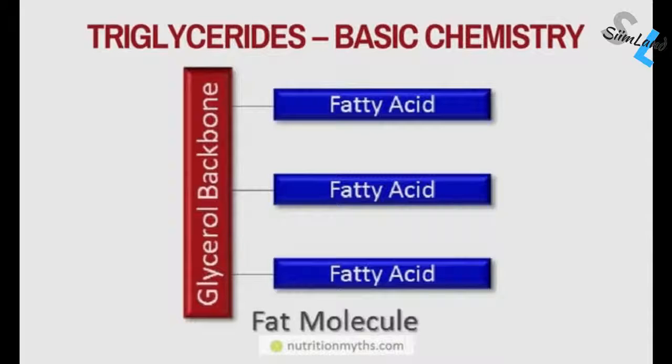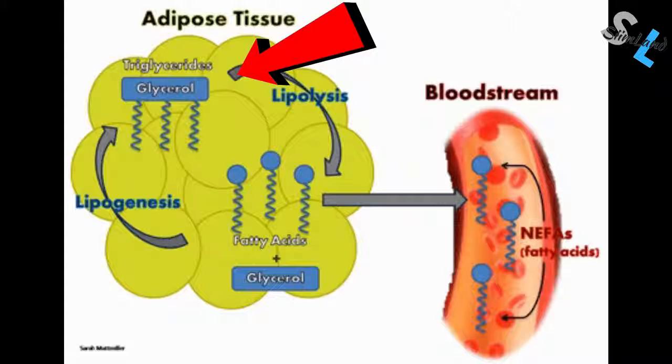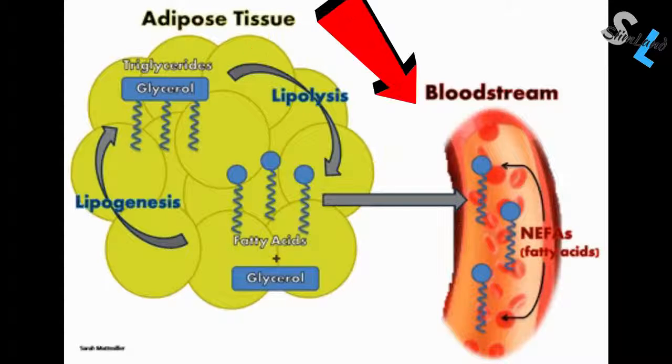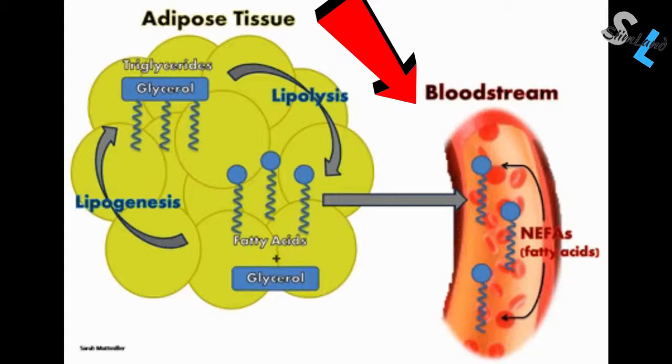When the liver gets depleted of energy, it's going to switch over from burning glucose into producing ketone bodies. Fatty acids that can be used as energy are called triglyceride molecules. Your adipose tissue is a deposit for stored triglyceride molecules. If you start burning body fat, you're releasing those triglycerides into the bloodstream and burning them off for energy.